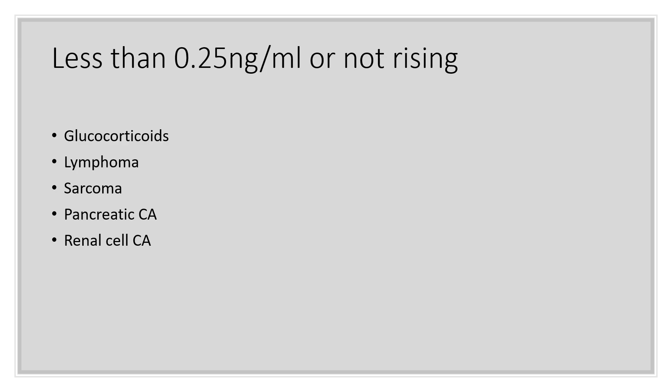The value may be less than 0.25 nanograms per mL, or it is not rising. At that point, you need to find out: have you administered glucocorticoids, or has the patient been given exogenous glucocorticoids somewhere? Are we dealing with lymphoma? Could this be sarcoma? Or pancreatic carcinoma or renal cell carcinoma?